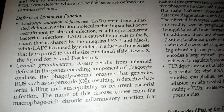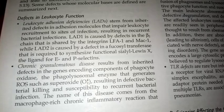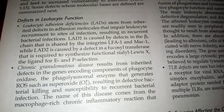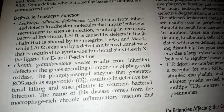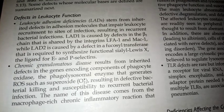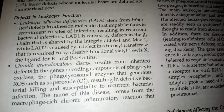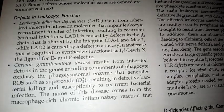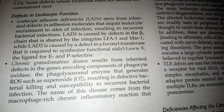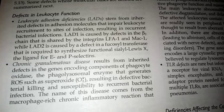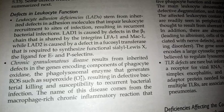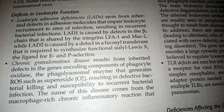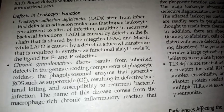LADs are inherited defects that prevent leukocytes from being recruited, causing severe and widespread bacterial infection. There are two types: LAD1 and LAD2. LAD1 occurs when the beta-2 chain — shared by LFA-1 and MAC-1 — is defective. LAD2 involves a defect in fucosyltransferase, impairing functional sialyl-Lewis X, which is the ligand for E and P selectins. Both LAD1 and LAD2 result in impaired leukocyte adhesion.